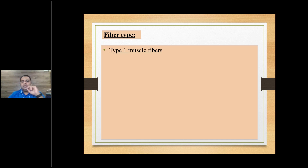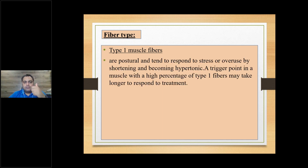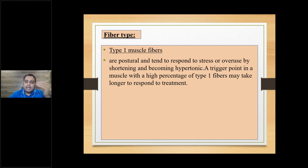Type one muscles are mostly postural muscles — they tend to respond to stress and overuse and become a trigger point. Muscles with a high percentage of type one fibers may take longer to respond. When we are standing continuously or doing long hours of sitting, the type one muscle fibers — being basically postural muscles — when there is an issue in them, they take longer to heal. Type two muscles are phasic muscles.